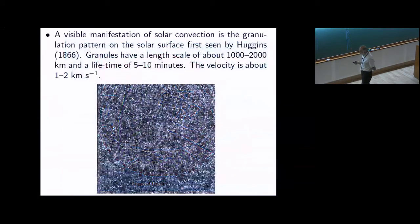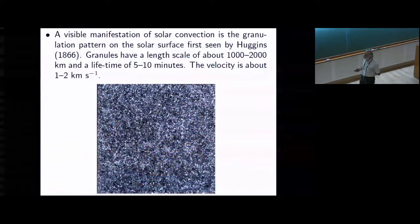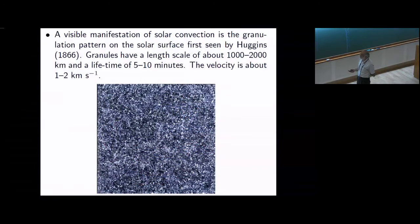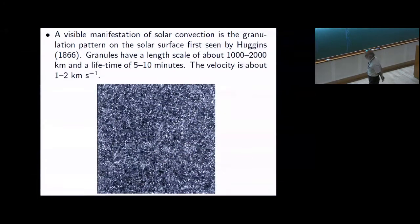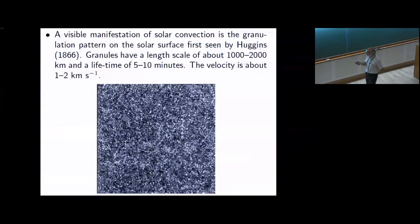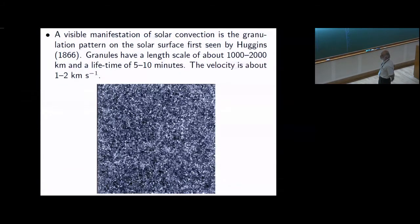This is a picture of the solar surface. You can see it is not uniform — there are bright and dark spots, the so-called granules. Granules are basically convective cells which transmit heat. Hot fluid comes from below, mixes with the surrounding at the surface, and then the cold fluid goes down. The hot fluid appears brighter and the cold one appears darker. The typical scale of these granules is about 1000 to 2000 kilometers, lifetime is 5 to 10 minutes, and velocity is 1 to 2 kilometers per second.